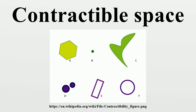A topological space is locally contractible if every point has a local base of contractible neighborhoods. Contractible spaces are not necessarily locally contractible, nor vice versa. For example, the cone space is contractible but not locally contractible. Locally contractible spaces are locally N-connected for all N greater than or equal to zero. In particular, they are locally simply connected, locally path-connected, and locally connected.